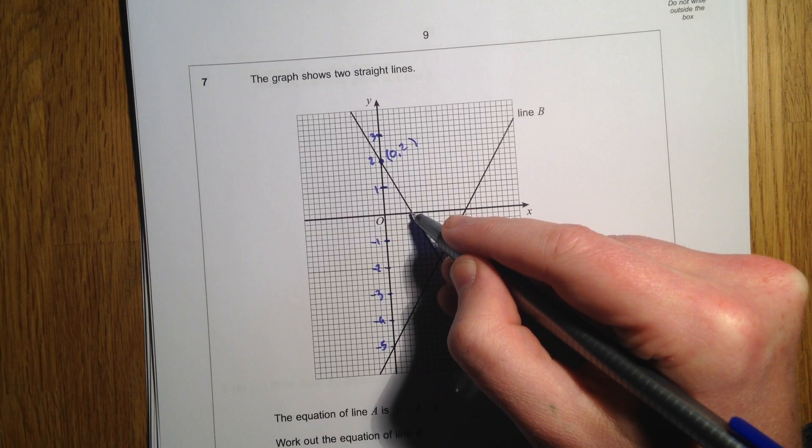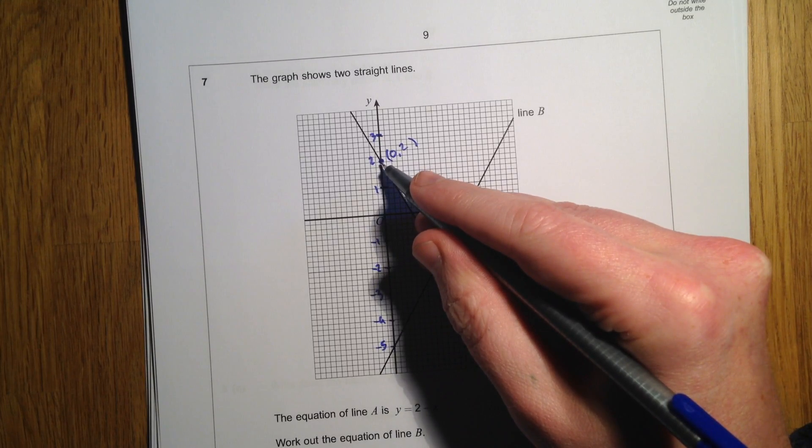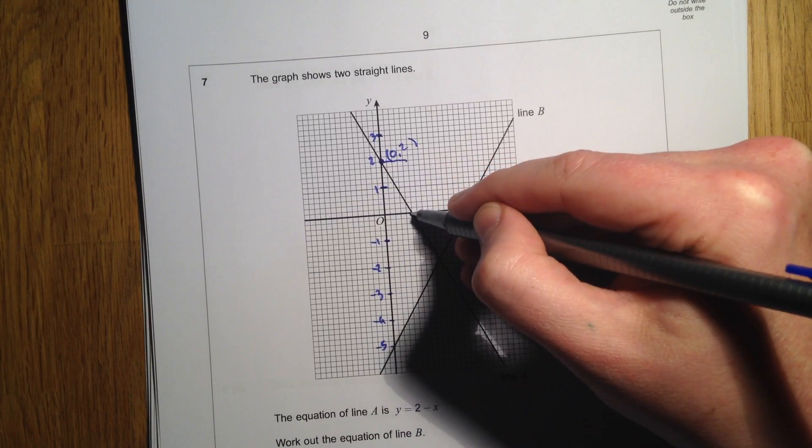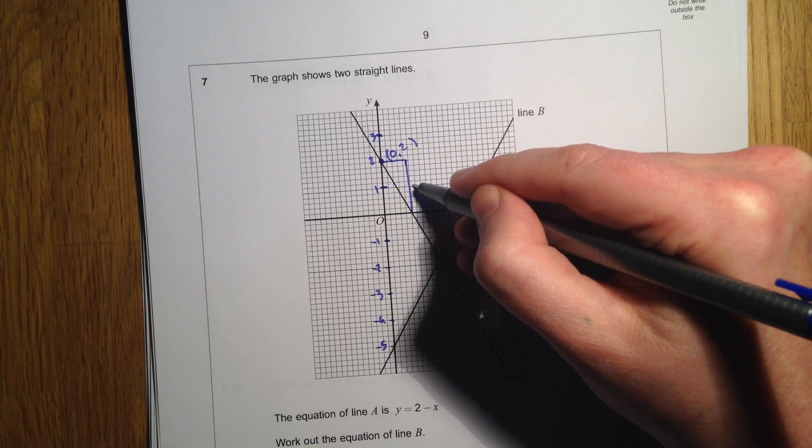Now the other bit of this equation is the minus x, so the gradient is negative 1.